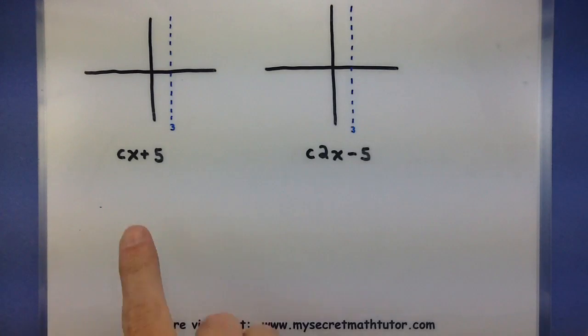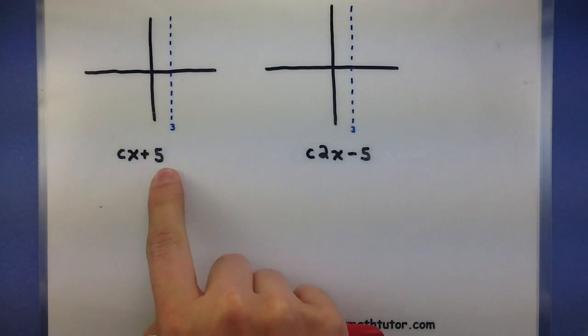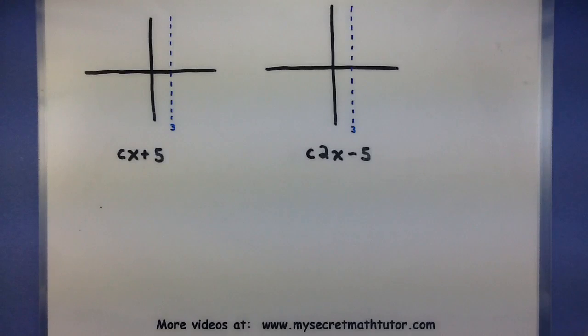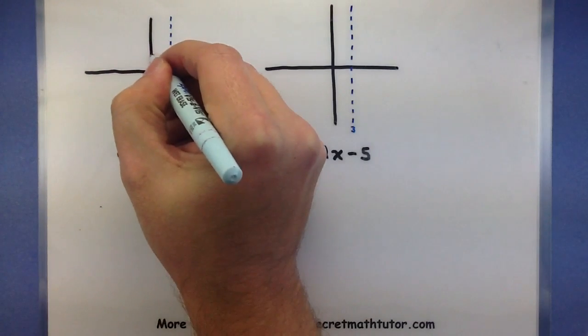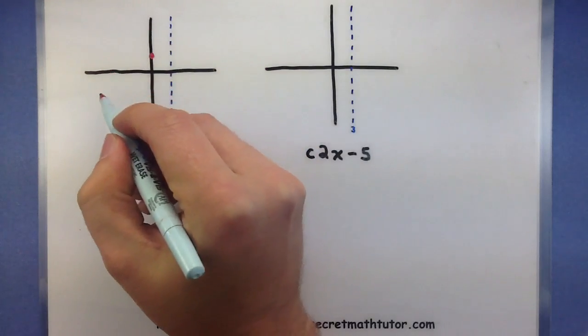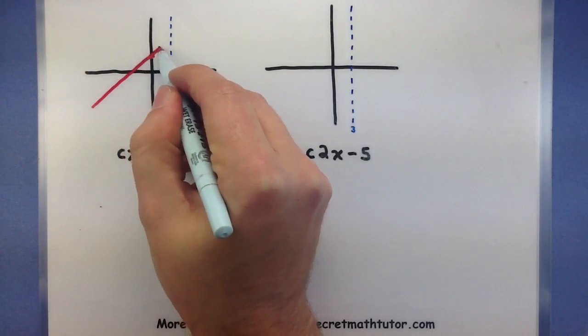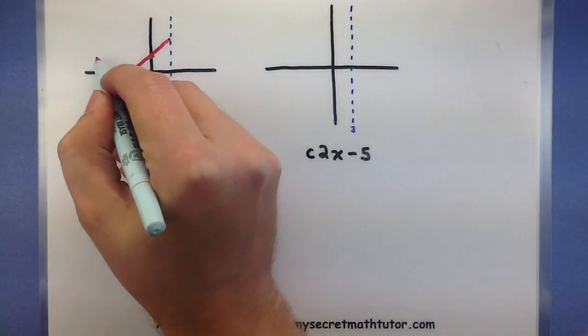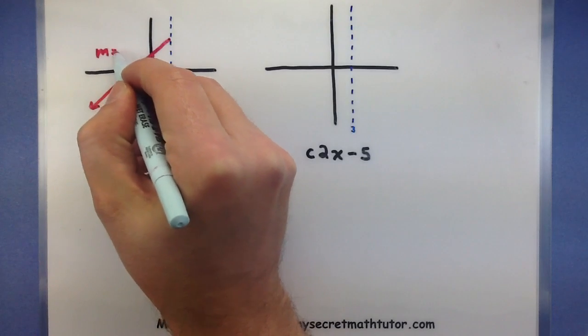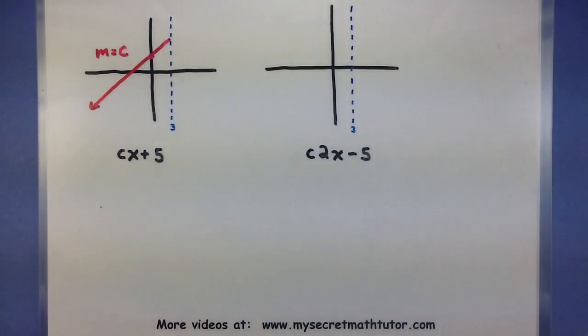This first one has a slope of c and goes through the y-intercept at 5. So if I was forced to draw this out, I'd want it to go through the y-intercept at 5 and then have some sort of slope equal to c. Now you'll notice that I stopped at that dotted line. That's because it only acts like this for values less than 3.